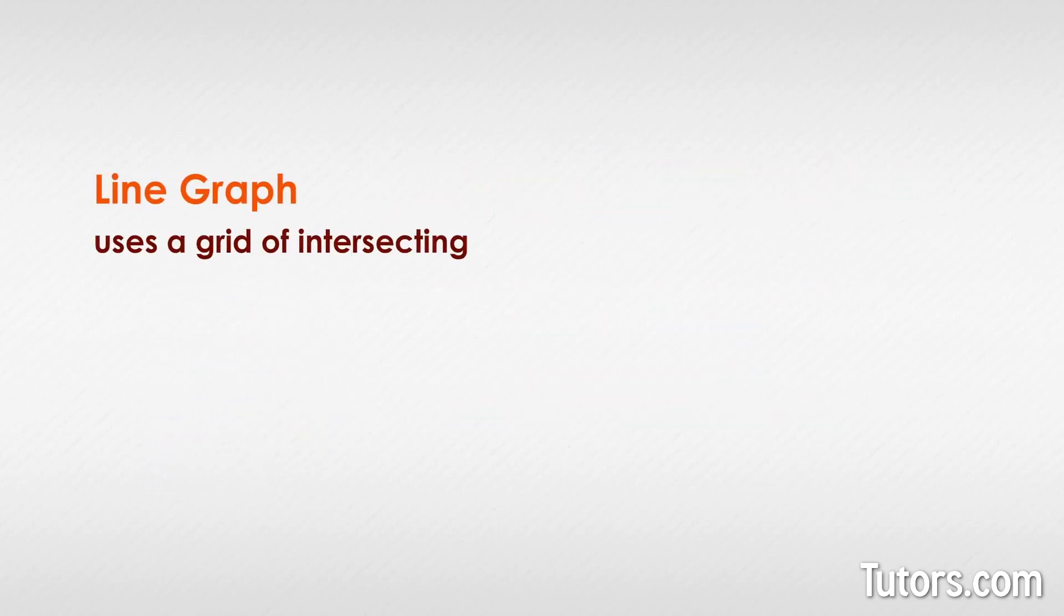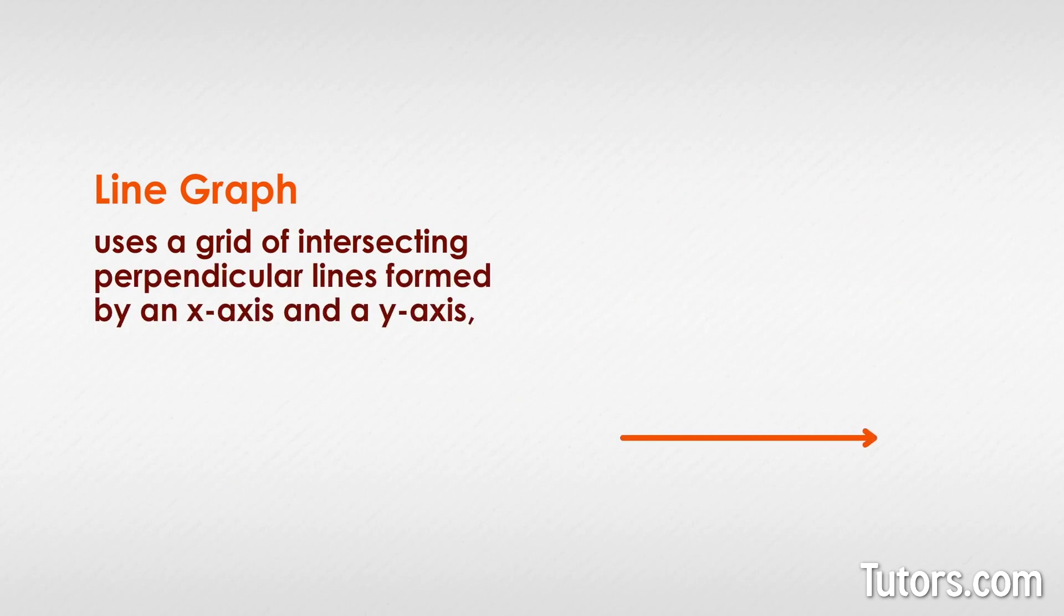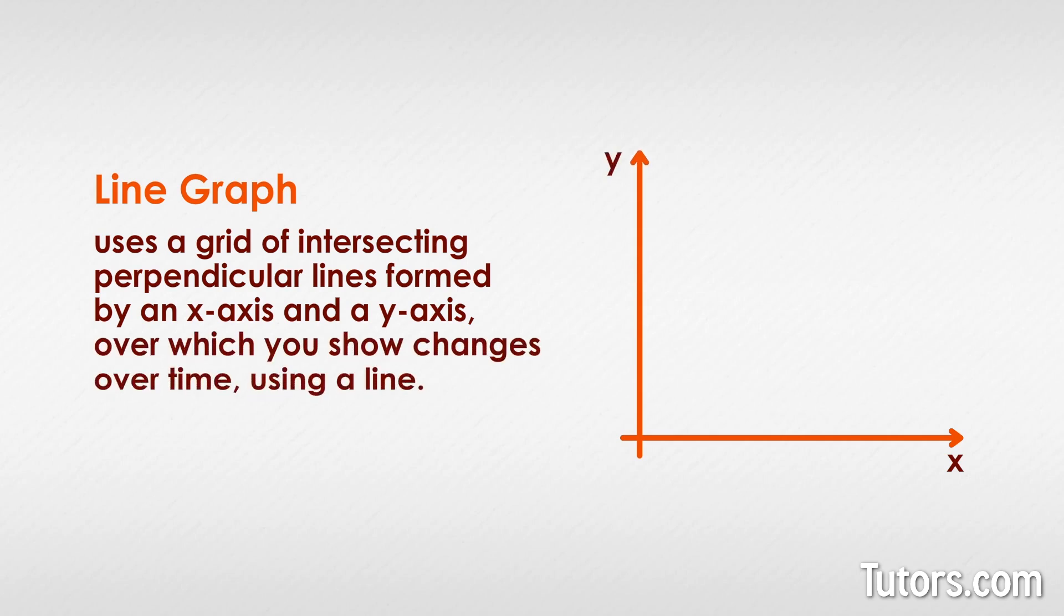A line graph uses a grid of intersecting perpendicular lines formed by an x-axis and a y-axis, over which you show changes over time using a line. The most important feature setting a line graph apart from, say, a bar graph is the graphical way it shows the passage of time.